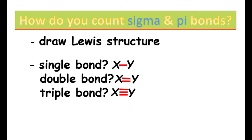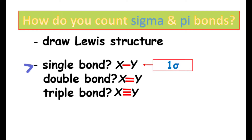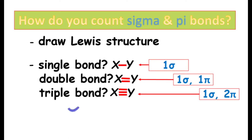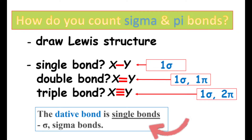So, if X is single bonded to Y, it will be one sigma bond. If the molecule contains a double bond, it will be one sigma bond and one pi bond. If X is triple bonded to Y, it will be one sigma bond and two pi bonds. Always bear in mind that a dative bond is a single bond, so it will be one sigma bond.